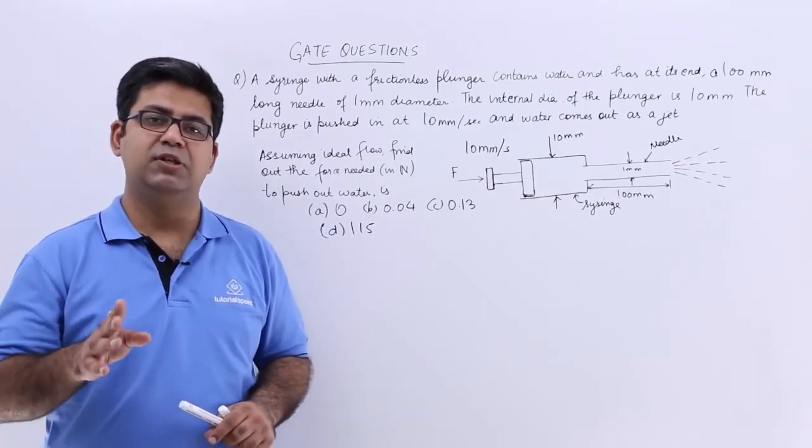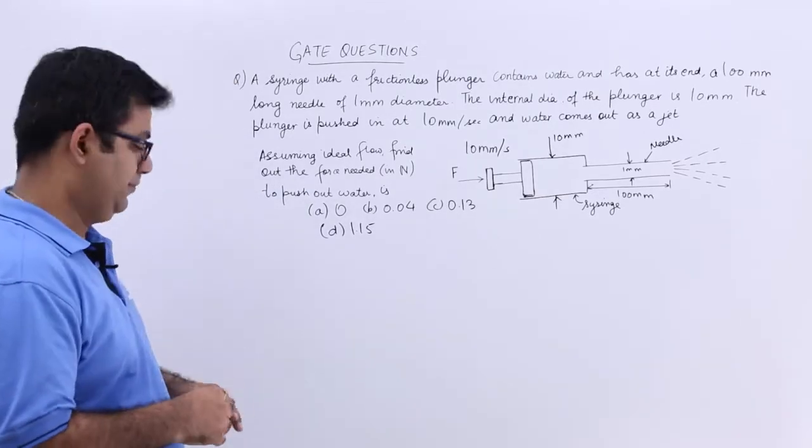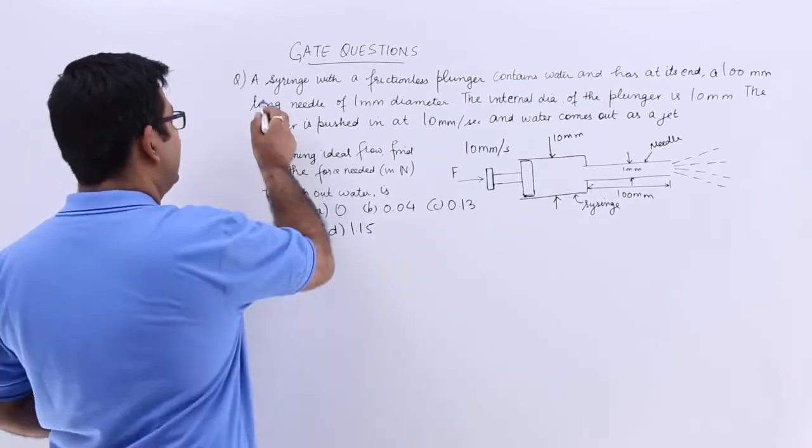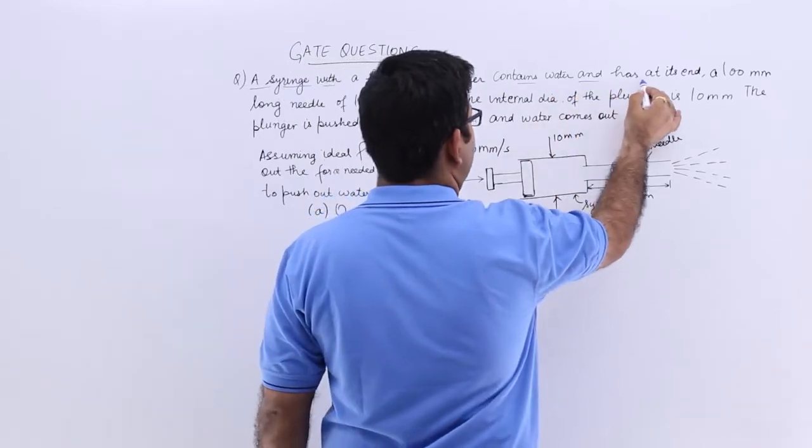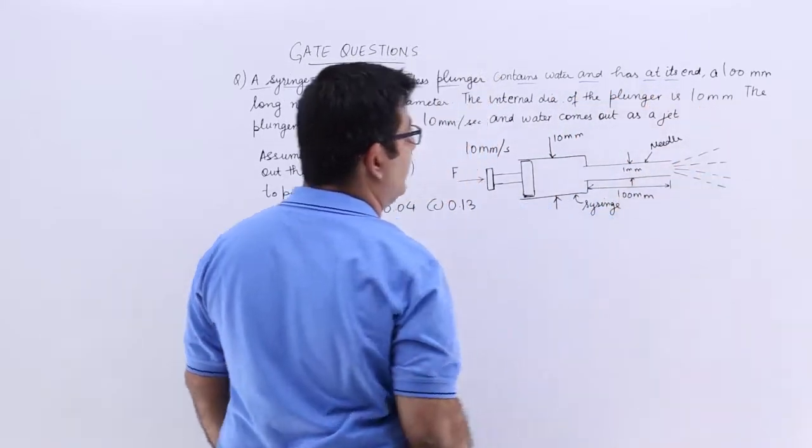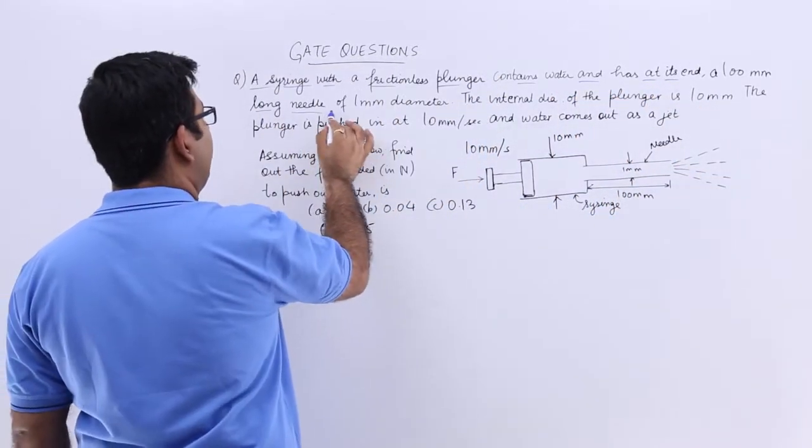Now let's look at question number 2, which is again from the year 2003. The question says a syringe with a frictionless plunger contains water and has at its end a 100 mm long needle of 1 mm diameter.